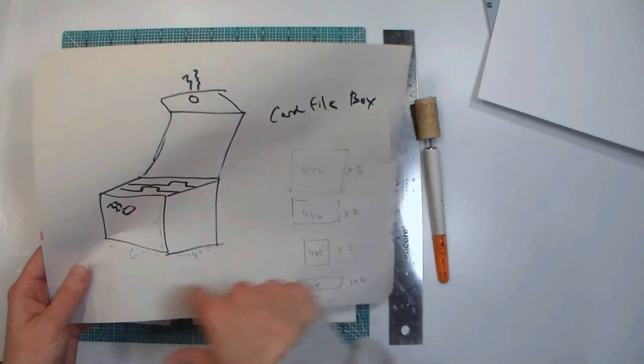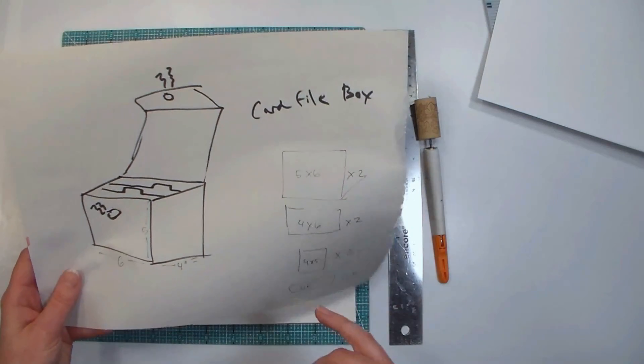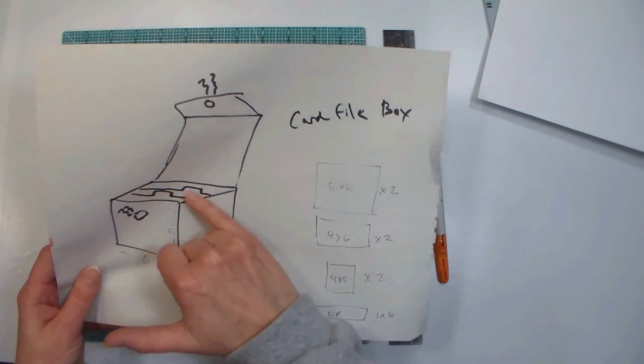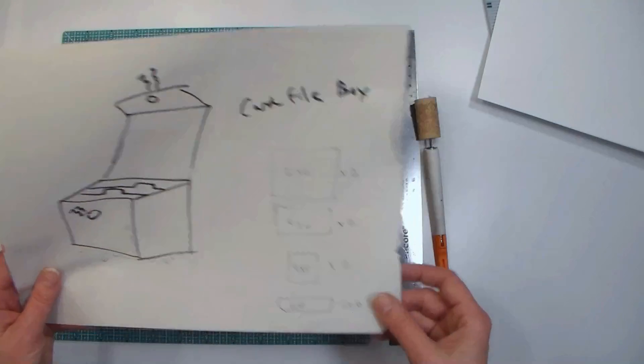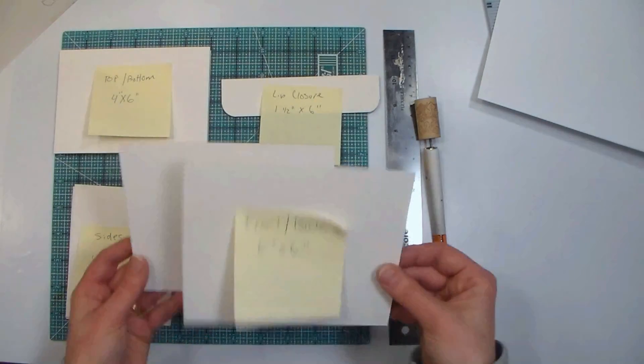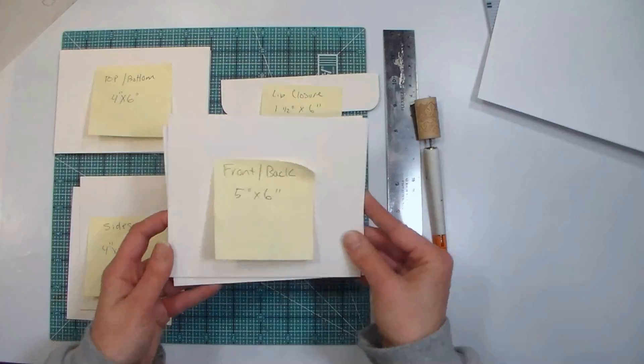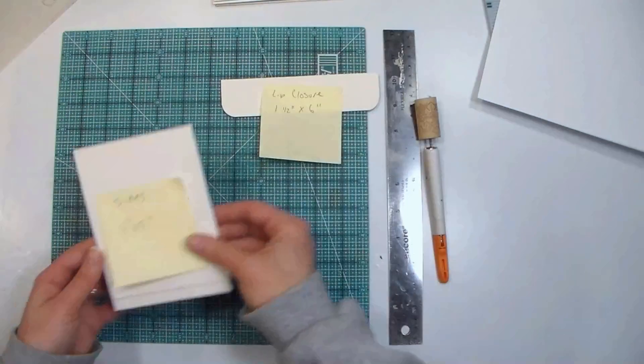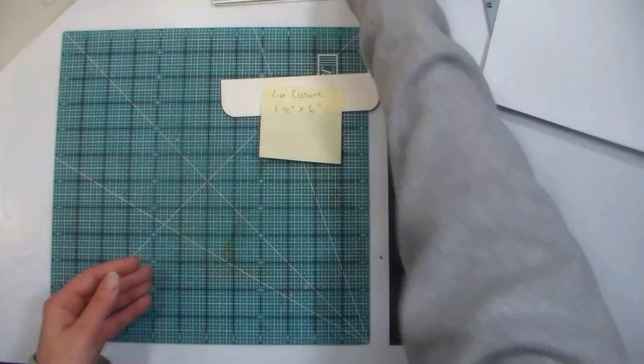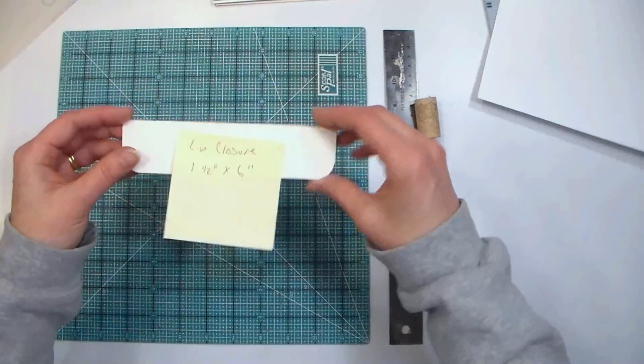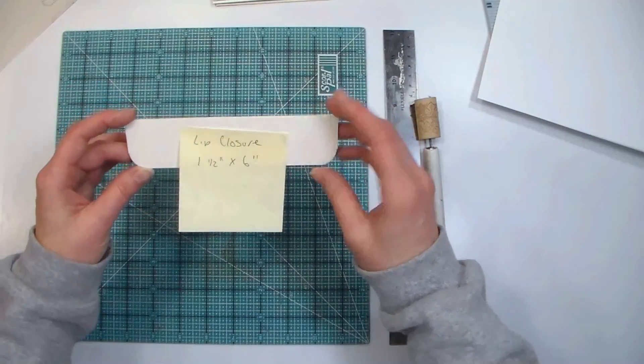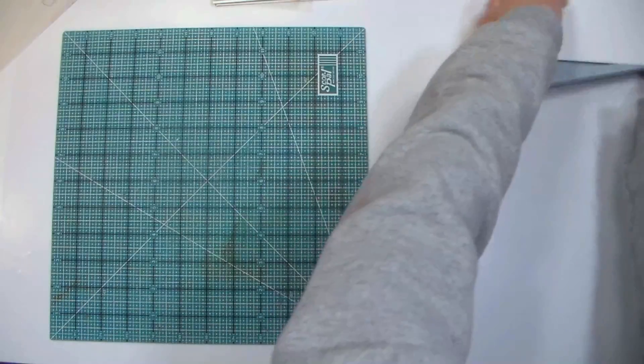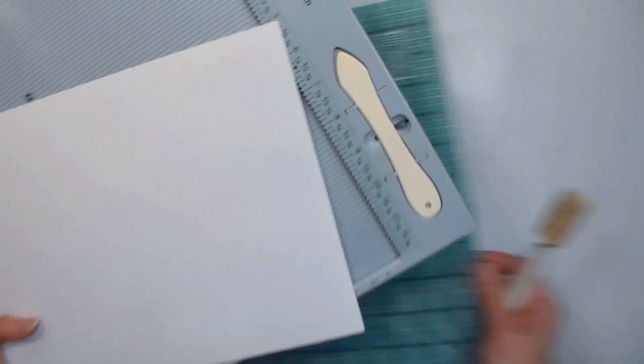To begin you're going to need some sturdy mat board or sturdy cardboard for your base and a sharp exacto knife and a metal edged ruler. I used mat board for mine, but you could glue two layers of cereal boxes together. You're going to cut two pieces at five by six, two pieces at four by six, two pieces at four by five, and then a lip enclosure which would be an inch and a half wide by six inches long. Then I just rounded the corners with a corner rounder.